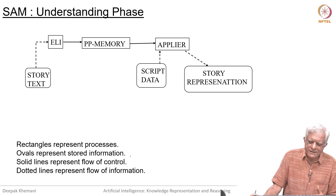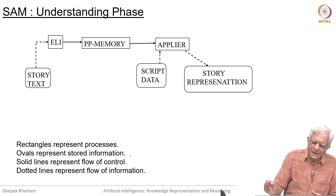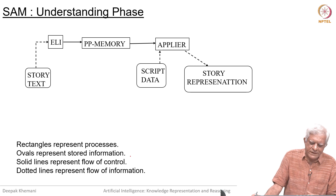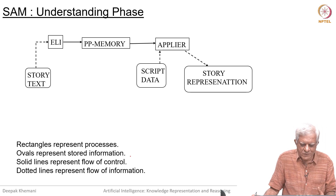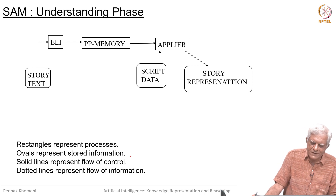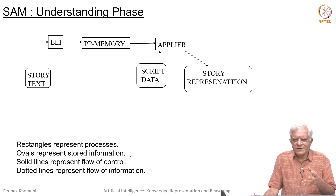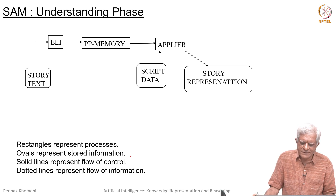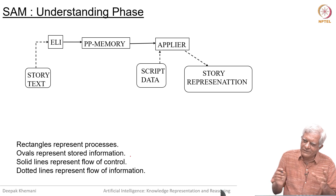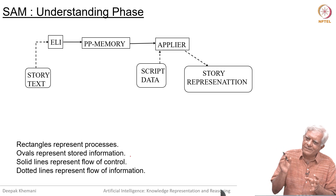This is how SAM is structured. It is a collection of programs. What you see in rectangles — LE, PP memory, and applier — are programs. What you see in oval-like structures is data. Solid lines represent flow of control and dotted lines represent flow of data or information. The first program to act is LE, which converts English language into conceptual dependency. The next program is PP memory, which is basically a semantic memory — it knows about props and roles applicable in the script. The third program maps input conceptualizations into specific patterns in the script.